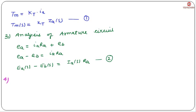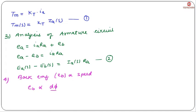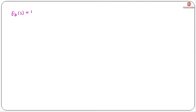Back EMF E_B is proportional to speed. From Faraday's Law of Electromagnetic Induction, EMF is proportional to the rate of change of flux linkage, dφ/dt. So back EMF equals K_B · dθ/dt. Applying Laplace: E_B(S) = K_B · S · θ(S). This is equation 3.